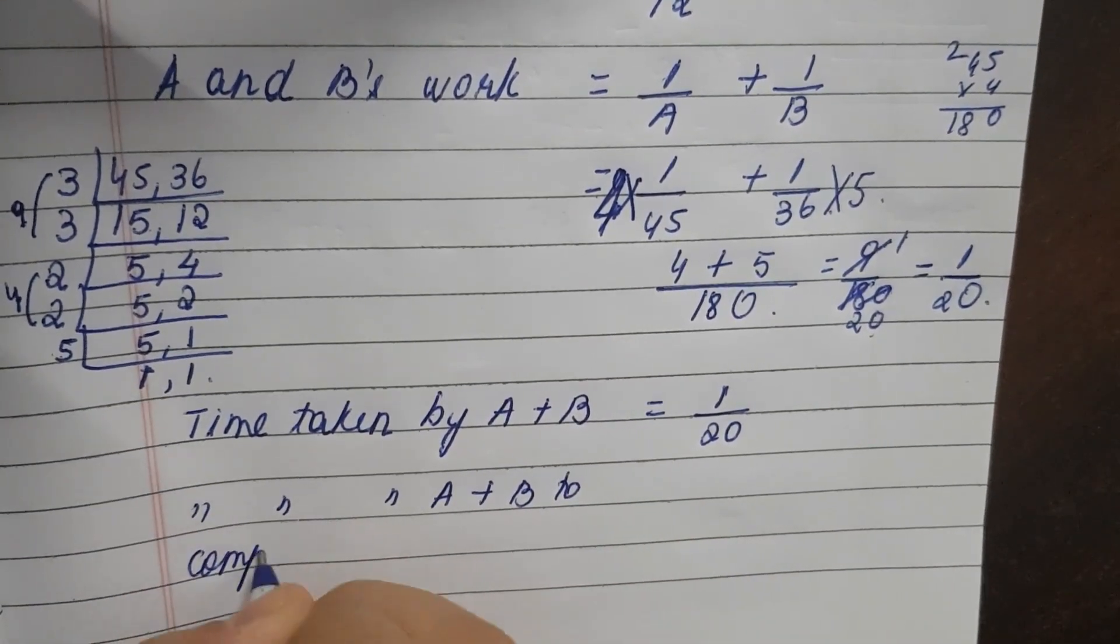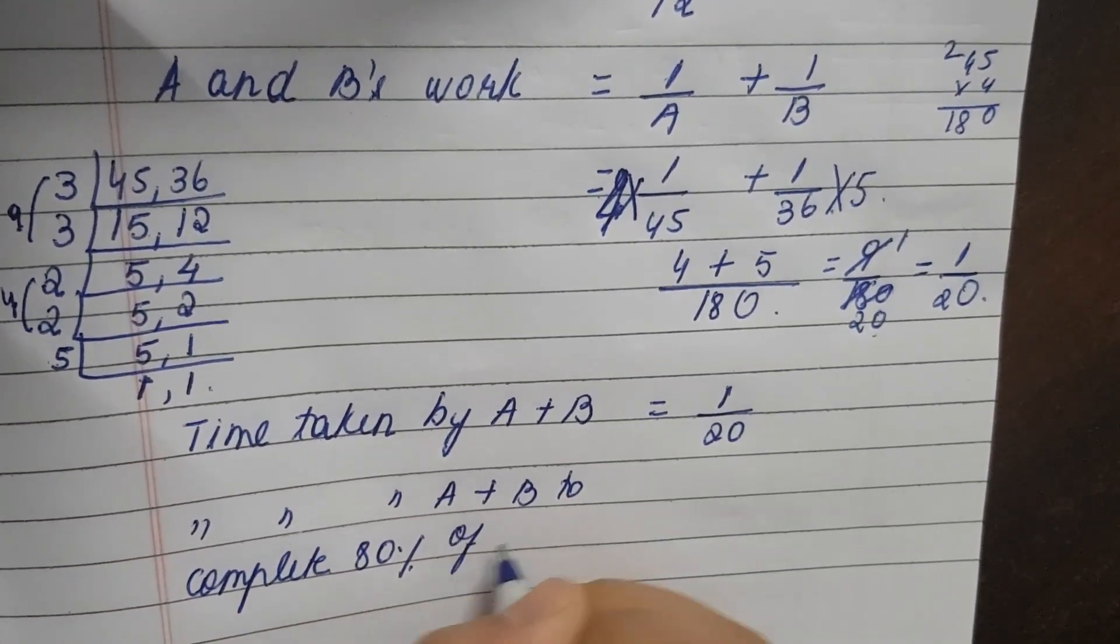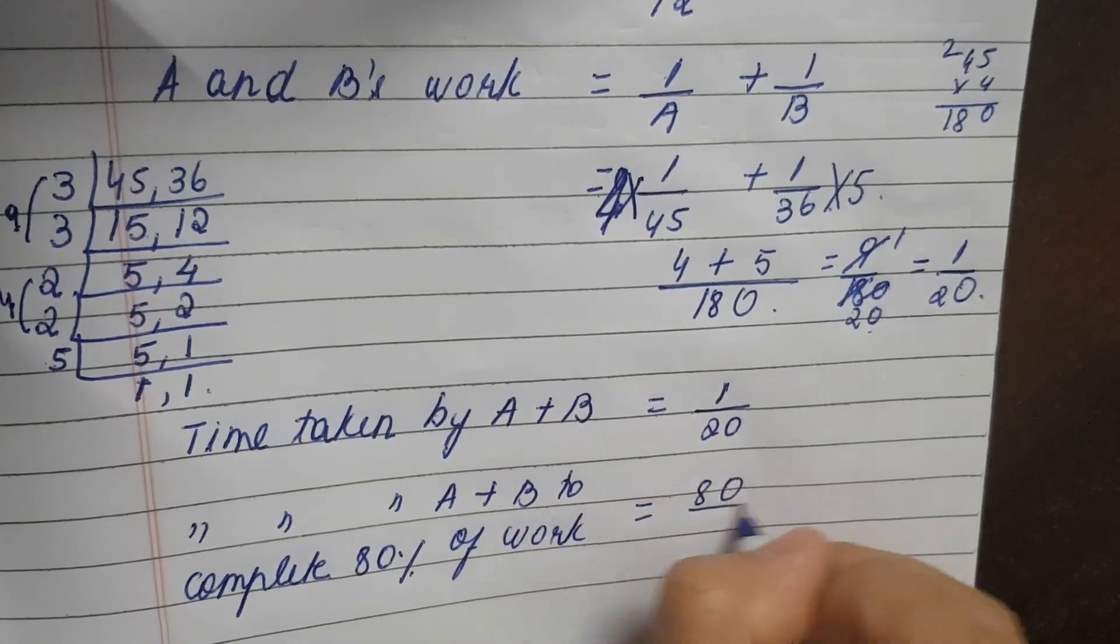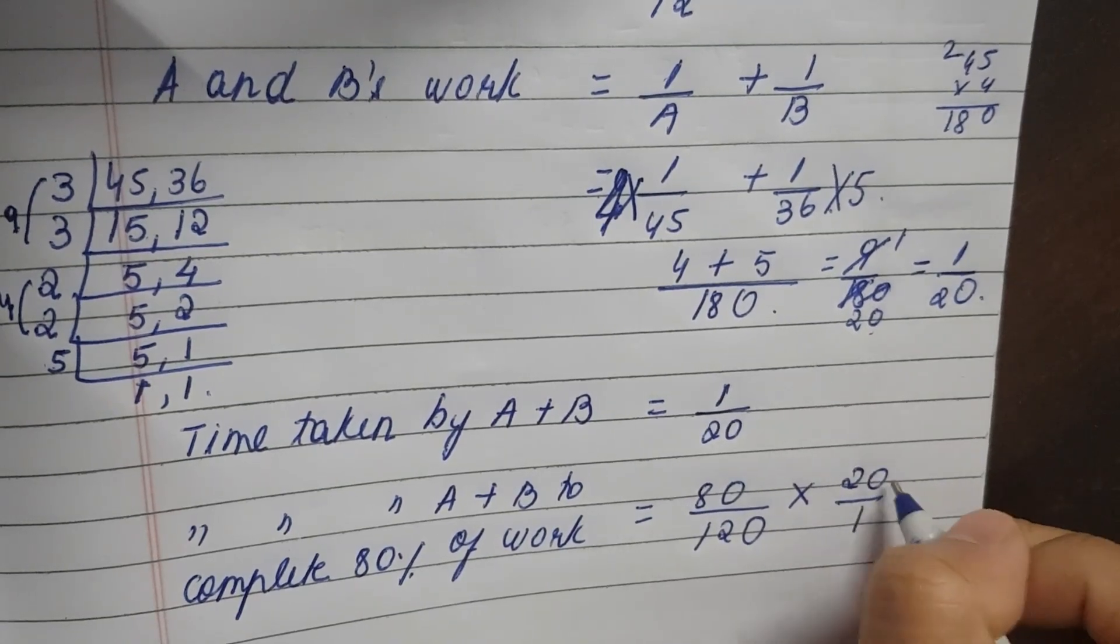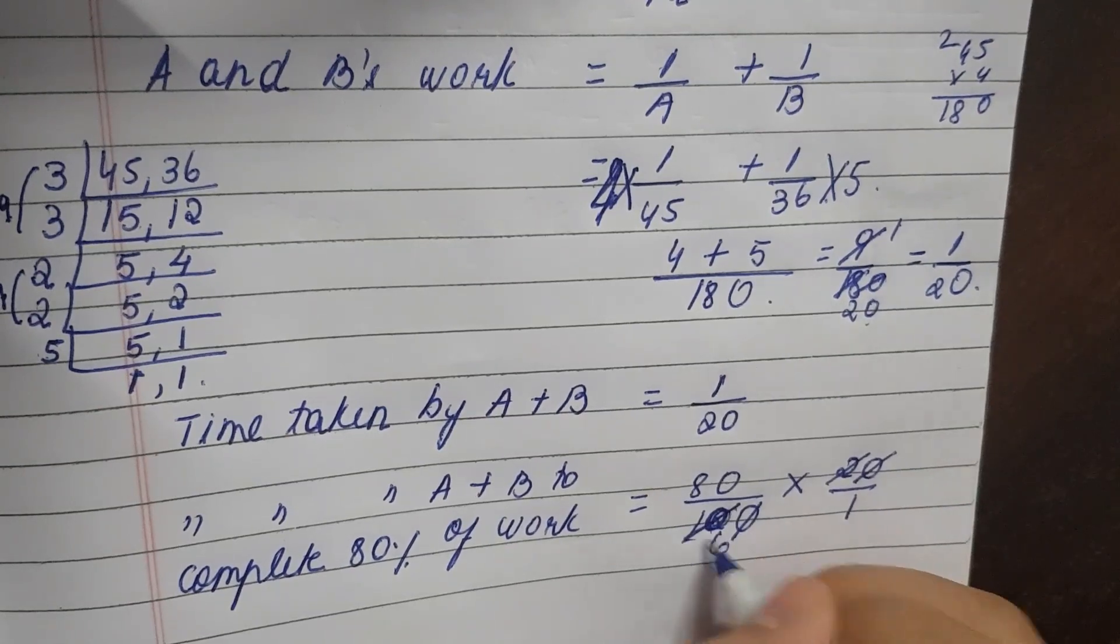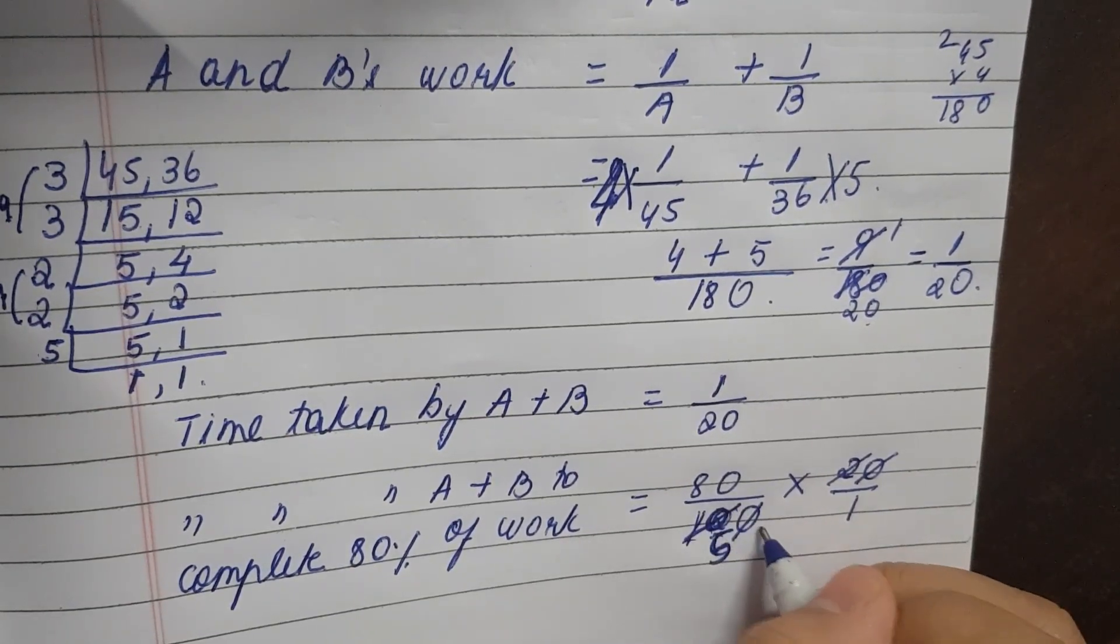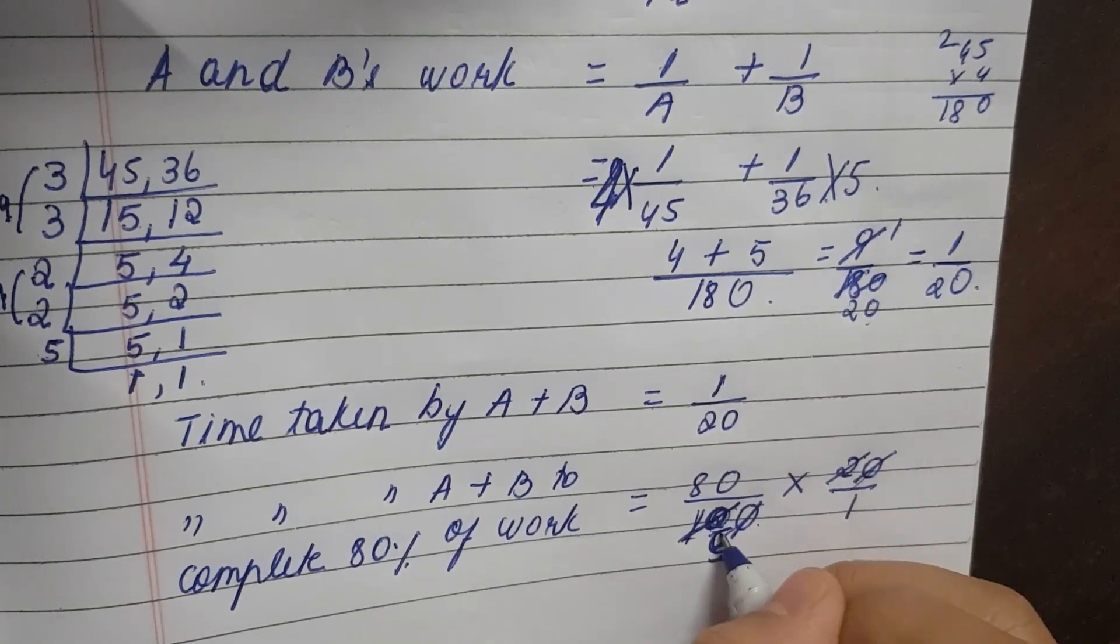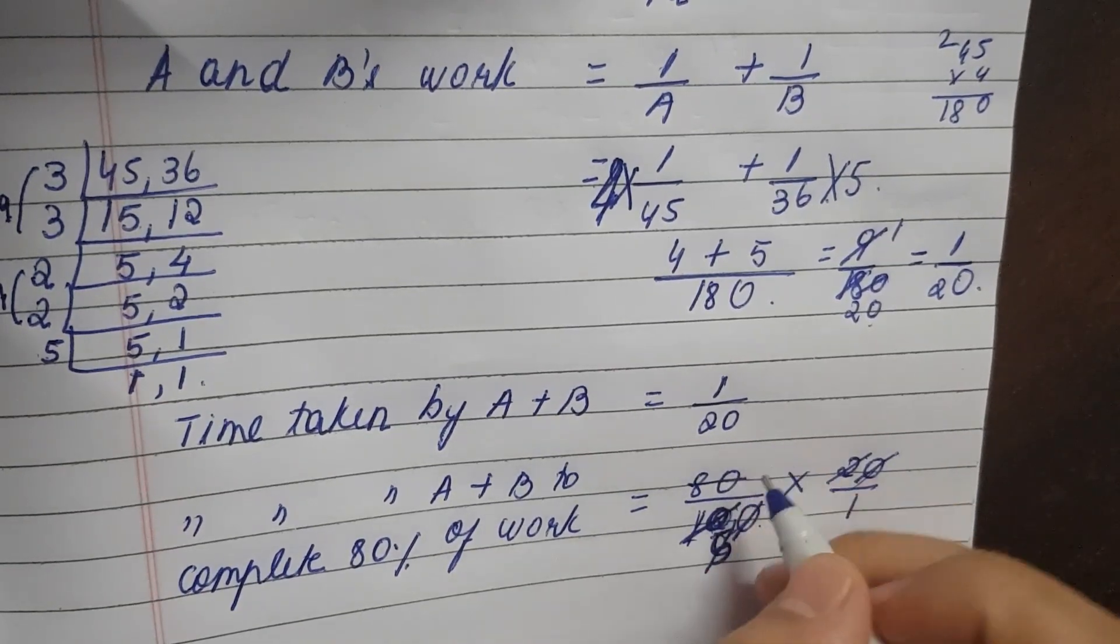So 80 percentage, it is 80 divided by 100, reciprocate, so it is 20 by 1. So zeros cancel, 2 one time, 10 five times. 80 divided by 100 into 20 reciprocate, so zeros cancel. 2 one time, 10 five times, 5 one time, 80 will go 16 times.